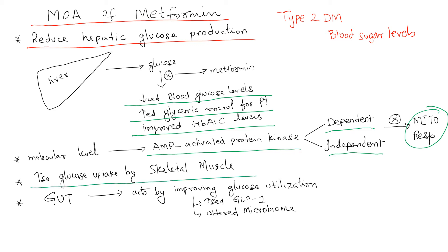At the skeletal muscle level, metformin increases glucose uptake. When you are exercising, your skeletal muscle needs energy, and that energy is met through glucose. Just as you have enhanced glucose uptake during exercise in skeletal muscle, similarly metformin also exerts its effect by helping skeletal muscle absorb circulating blood glucose.